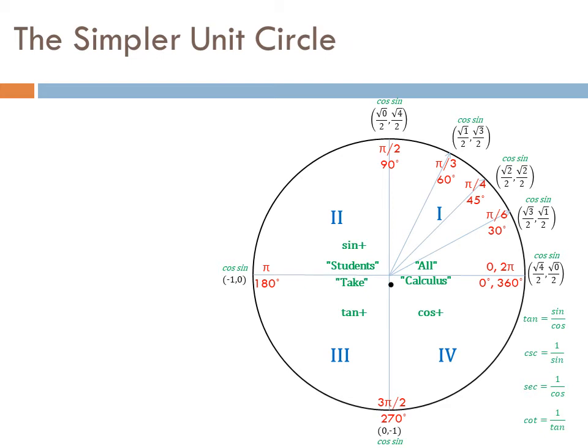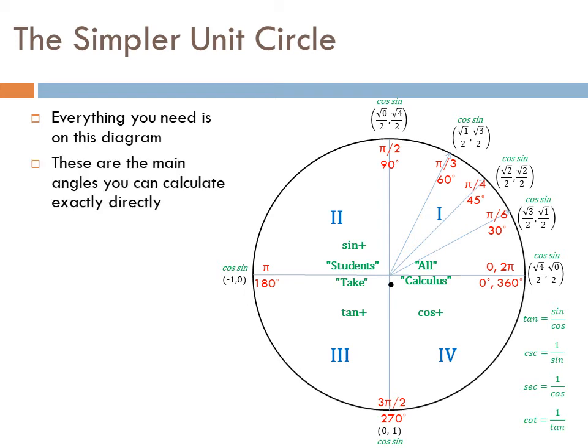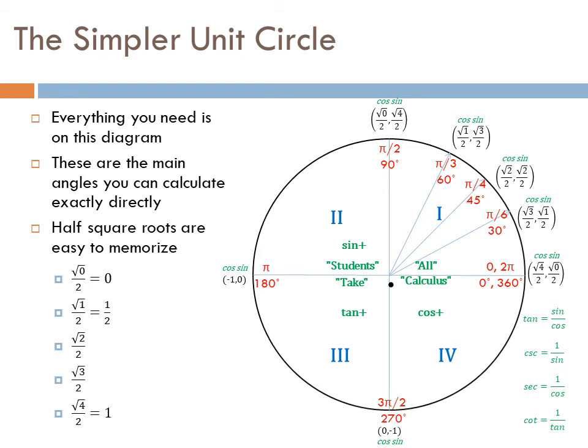It's time to introduce the simpler unit circle. Everything you need is on this diagram — these are the main angles you can calculate exactly. The half-square-root pattern is easy to memorize: the first angle (zero) is the square root of 0 over 2, then one half is the square root of 1 over 2, then square root of 2 over 2, square root of 3 over 2, and finally square root of 4 over 2 which is 1.